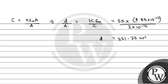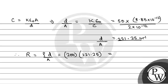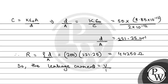This will be the value of D/A. Therefore, resistance R will be equal to ρ·D/A, which will be equal to — ρ is given as 200 ohm meter — so 200 into 221.25, which gives 44,250 ohm. This is the resistance R equal to ρ·D/A.